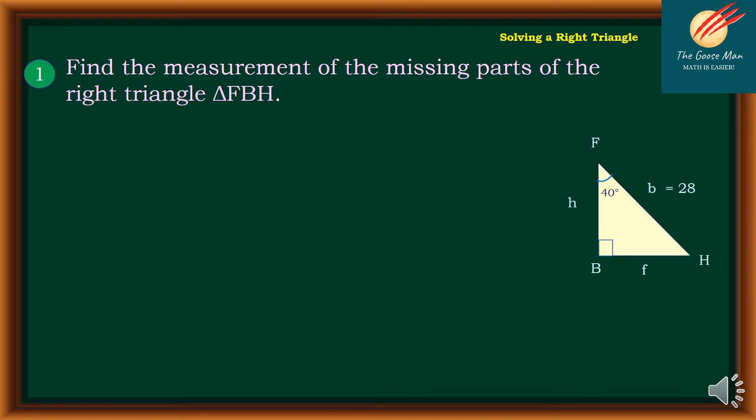This time, let's solve or find the measurement of the missing parts of triangle FBH. Take note that side FH is the hypotenuse and angle F is the acute angle. The first one is we would like to find angle H.